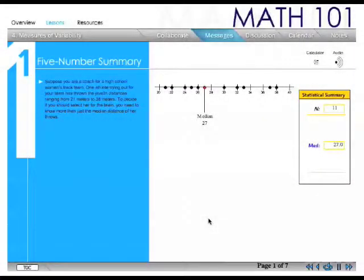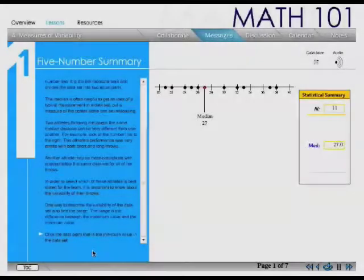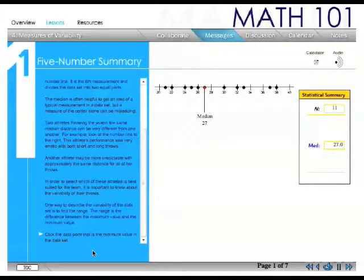Suppose you are a coach for a high school women's track team. One athlete trying out for your team has thrown the javelin distances ranging from 21 meters to 38 meters. To decide if you should select her for the team, click the data point that is the minimum value in the data set.